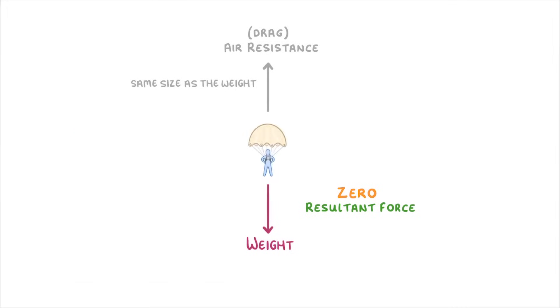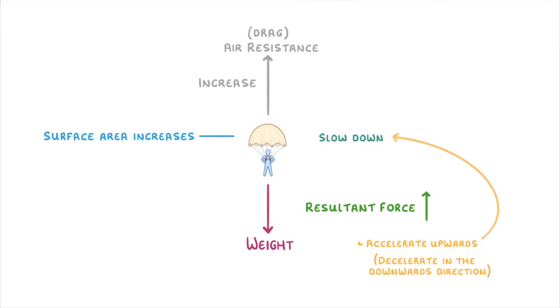Now if the person decided to open up their parachute, then their surface area would suddenly increase massively. And so the air resistance would increase as well. This means that the resultant force would now be upwards, meaning that the person will accelerate upwards, or effectively decelerate in the downwards direction. And so slow down, and fall more slowly.